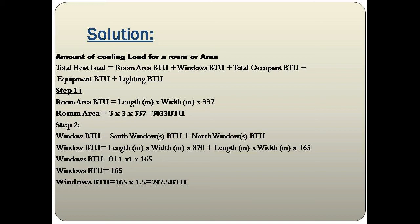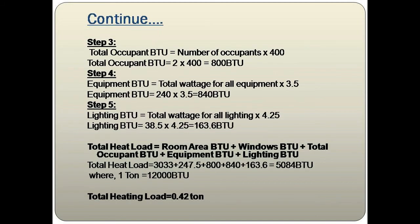Step 2 — There is no south-facing window, so south window BTU = 0. North window BTU = 1 × 1 × 165 = 165. Since there are no blinds, multiply by 1.5: total windows BTU = 165 × 1.5 = 247.5 BTU. Step 3 — Total Occupants BTU = number of people × 400 = 2 × 400 = 800 BTU.